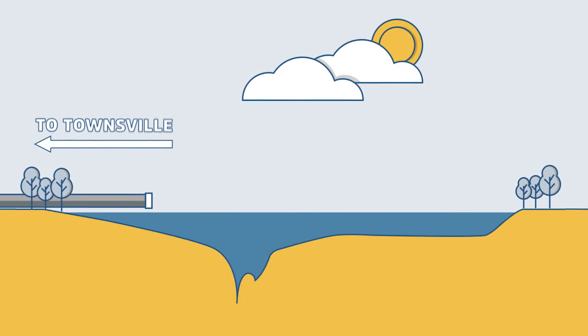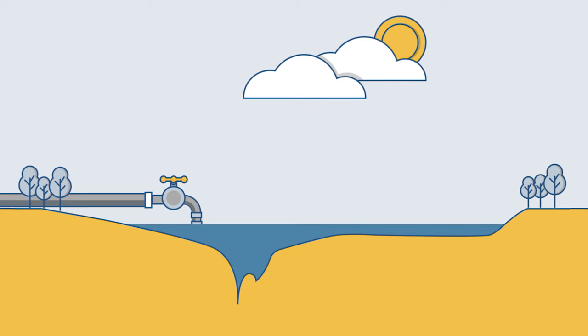This is the Ross River Dam, Townsville's main water supply. Its levels are running low.